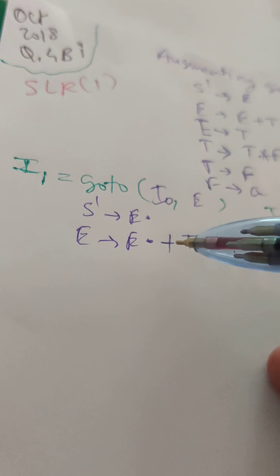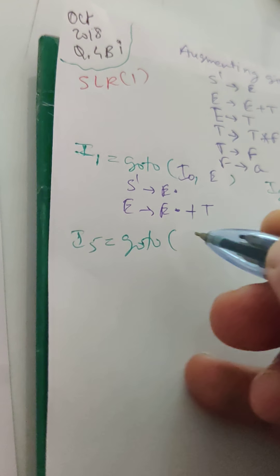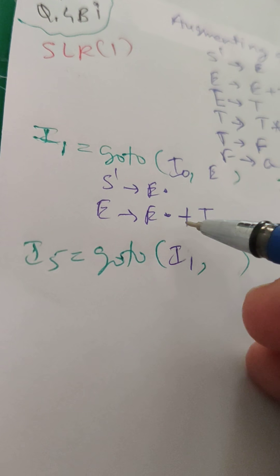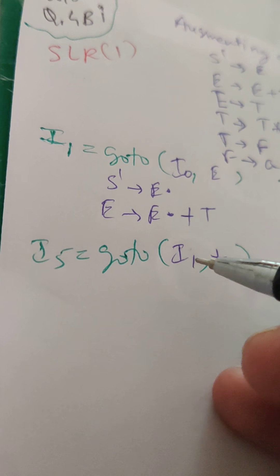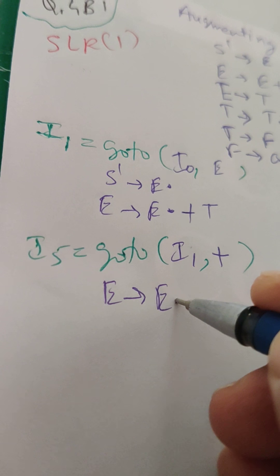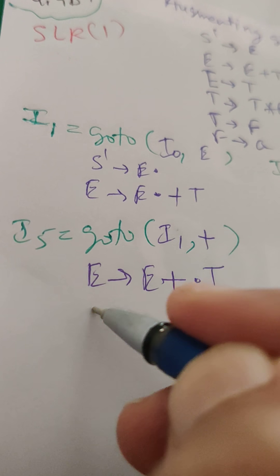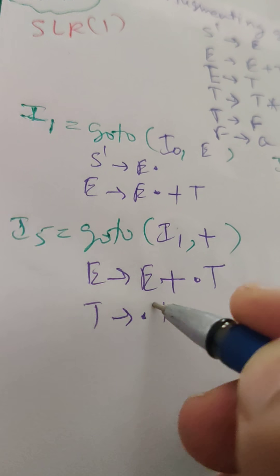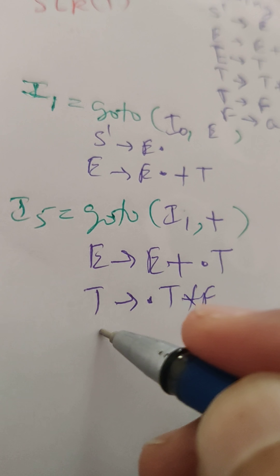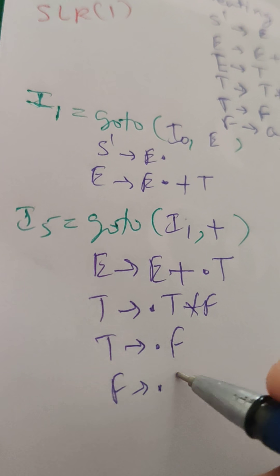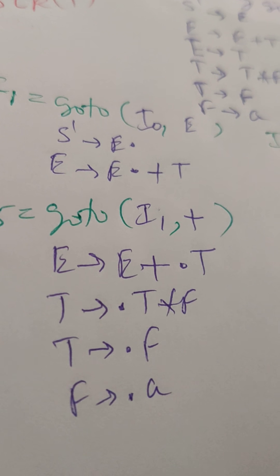Now I1 has plus after the dot, so I5 is the GOTO of I1 on plus. Shifting the dot gives E → E+.T. After the dot is non-terminal T, so we take T's rules: T → .T*F and T → .F. After the dot is non-terminal F, so we take F's rule: F → .A.